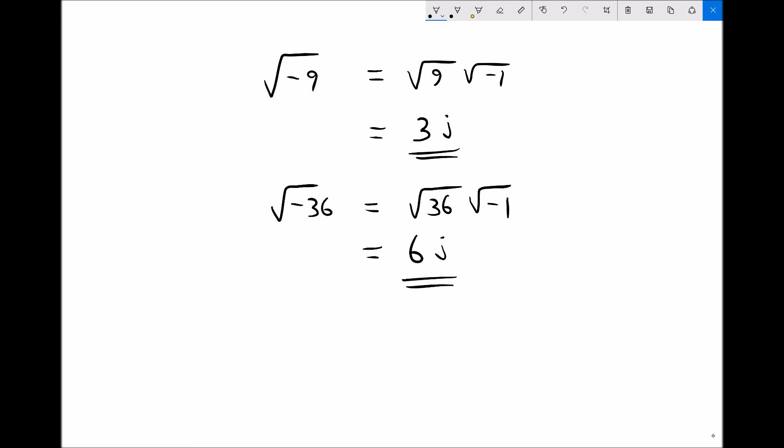We'll just do one more of these. If we have the square root of minus 81, that's the same as the square root of 81 times the square root of minus 1, which is the same as 9j.